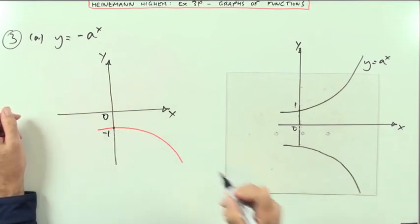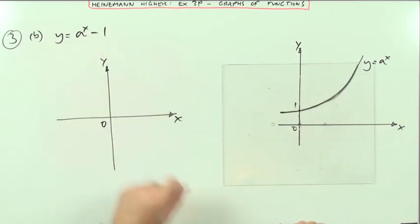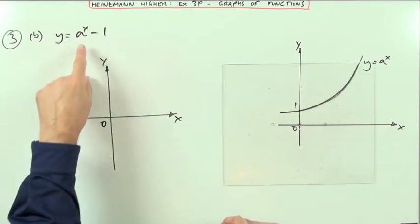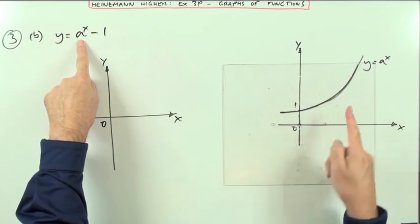So that's now crossing at negative 1. Right, B: Y equals A of X minus 1. Again, X is where you're going to plot your answers, so there's no change there.